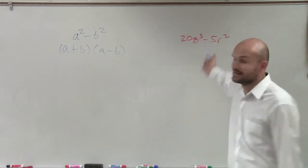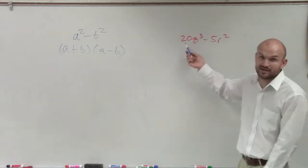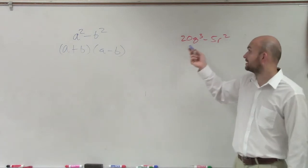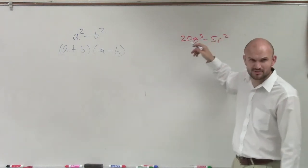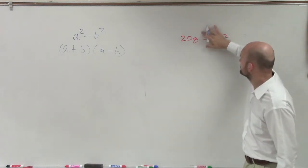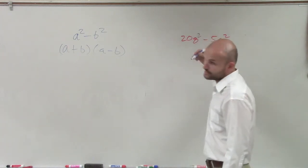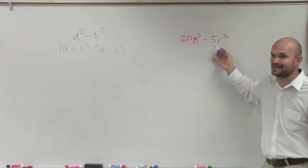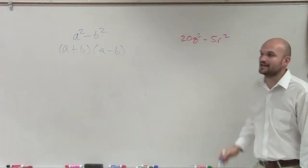So I look at this problem and I say, all right, do I have an a squared? Can I write 20 as a squared number? No. Can I write q? Is it q cubed? It's squared, right? That's what I thought. I can write q squared, though. But I can't write 5 as a squared number. But I can write r.